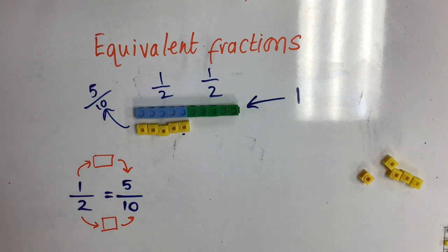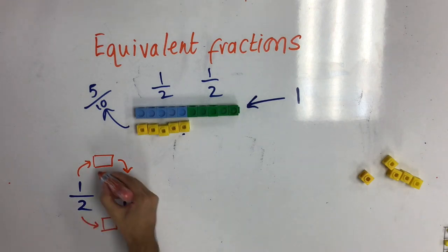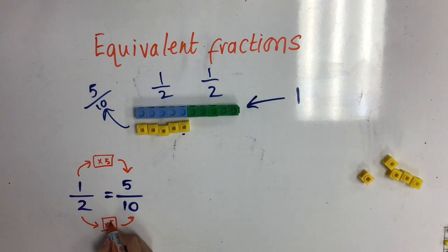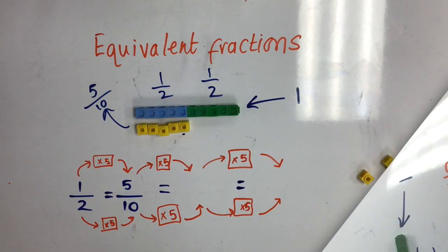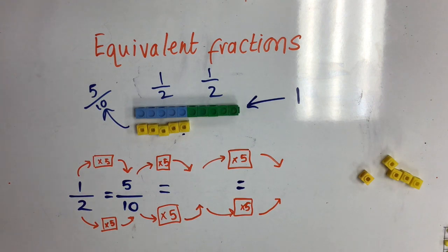Hopefully you might have worked out that one times five equals five, and that two times five equals ten. By continuing to times by five, you can keep finding the equivalent fractions of one half and five tenths.